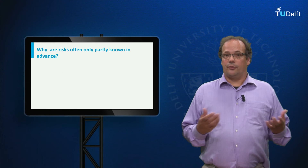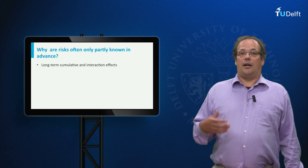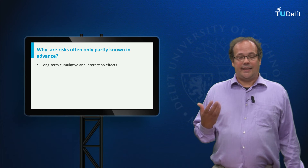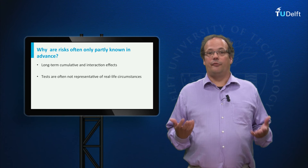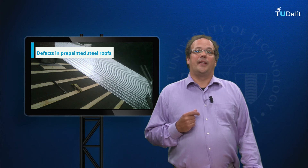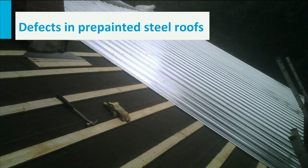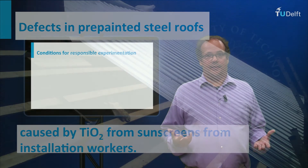For three reasons, the risk of nanoparticles can only to a limited extent be determined beforehand. First, there are long-term cumulative and interaction effects that cannot be tested in the laboratory. Second, lab tests are often not representative of real-life circumstances. Third, ignorance. An interesting example of ignorance is the appearance of defects on pre-painted steel roofs that turned out to be caused by titanium dioxide from sunscreen used by workers during installation — and nobody had ever expected this. Due to these reasons, the current introduction of titanium dioxide particles in sunscreen is a kind of social experiment, whether you like it or not.